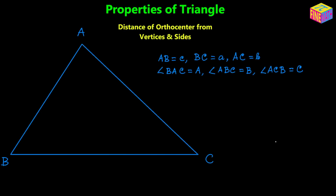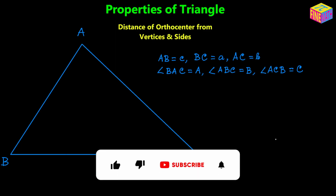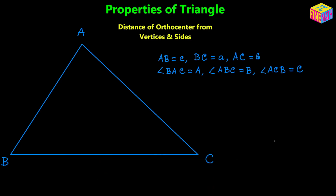Hi everyone. In this video we are going to see how to find the distance of the orthocenter from the three vertices and the three sides. Let's suppose we have a triangle ABC, where side AB is denoted by lowercase c, side BC by lowercase a, and side AC by lowercase b. Angle BAC is denoted by uppercase A, angle ABC by uppercase B, and angle ACB by uppercase C.